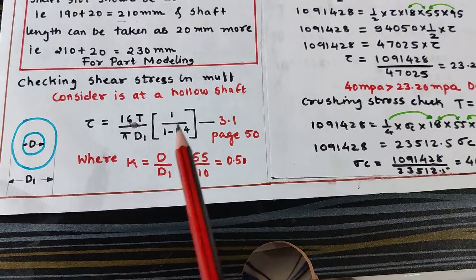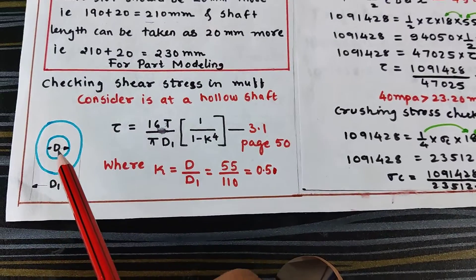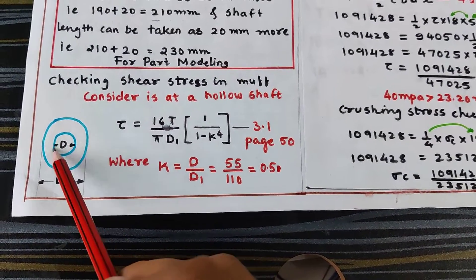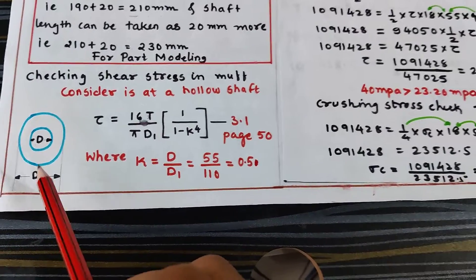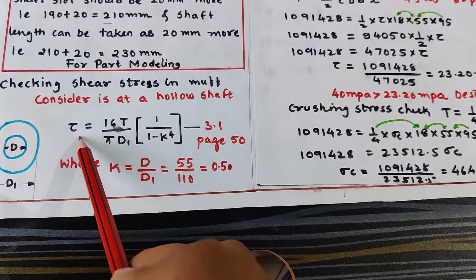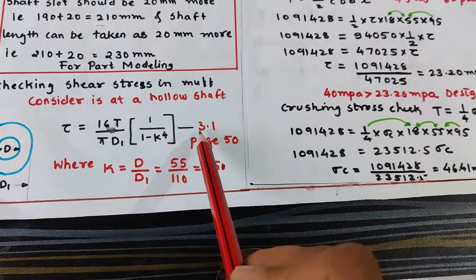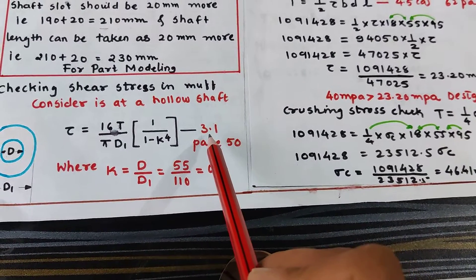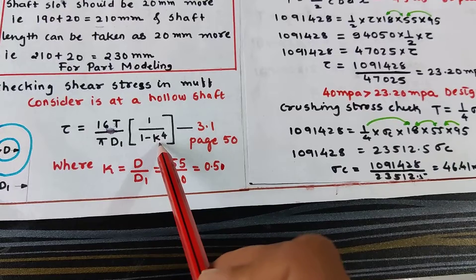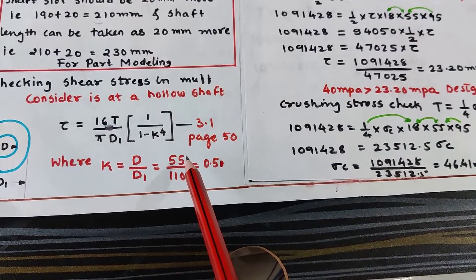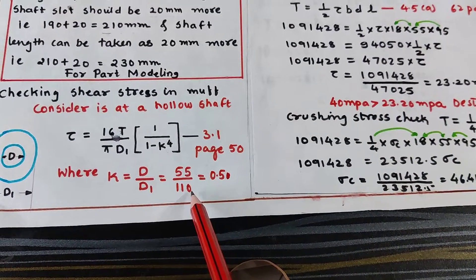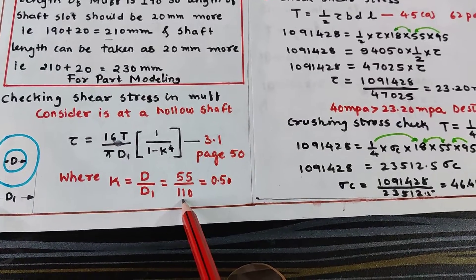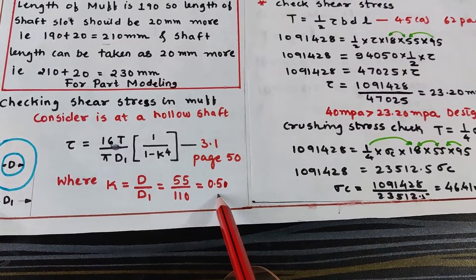Now checking the shear stress in the MUF, treating it as a hollow cylinder where D is the shaft diameter and D1 is the MUF diameter. Using equation 3.1 from page 50, K = shaft diameter / MUF diameter = 55 / 110 = 0.5.